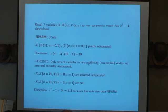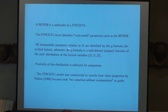Now, his model is a sub-model of mine. He makes more assumptions. Mine never identifies cross-world parameters. All manipulable parameters relative to g, that's the graph I just told you about, are identified. So any manipulable parameters are identified by the g formula, which we'll get to below, whenever the g formula is a well-defined, unique function of the joint distribution of the factuals.